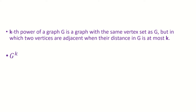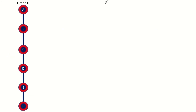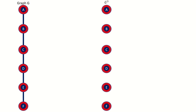We denote the kth power of a graph using superscript notation as shown here. Let's work through a few examples now. What is the third power of a path graph with six vertices? First, build the vertex set of the graph power — it is the same as the vertex set of our original graph. Now let's look at one vertex at a time.